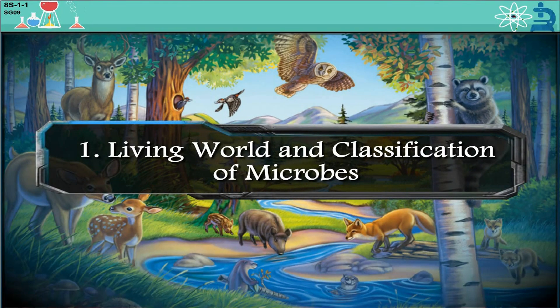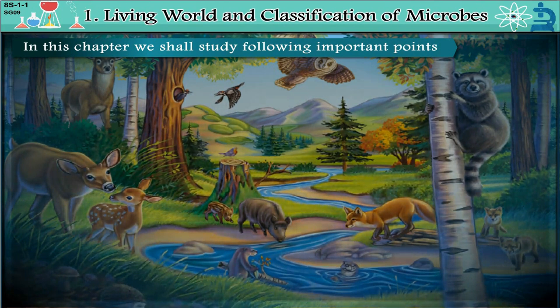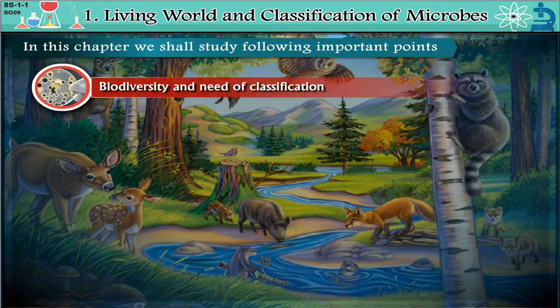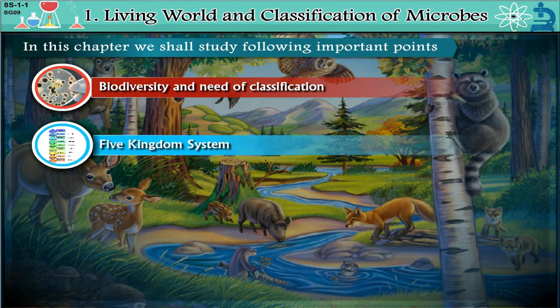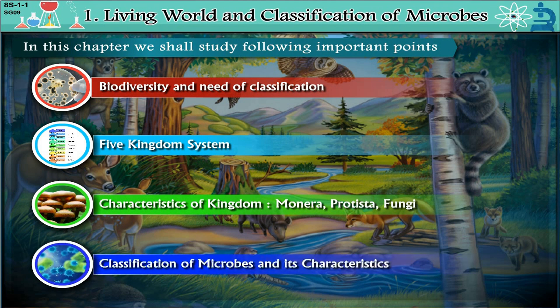Chapter 1: Living World and Classification of Microbes. In this chapter, we shall study the following important points: Biodiversity and Need of Classification, Five Kingdoms System, Characteristics of Kingdom Monera, Protista, and Fungi, and Classification of Microbes and its Characteristics. Let's learn each of these in detail.